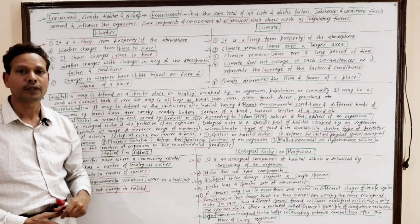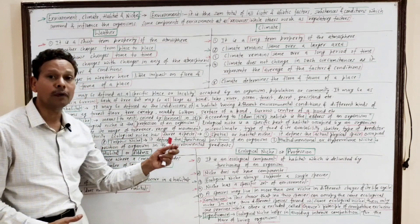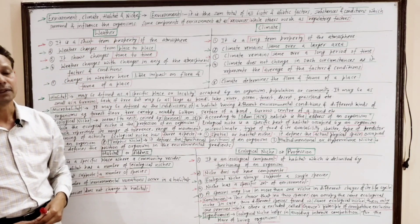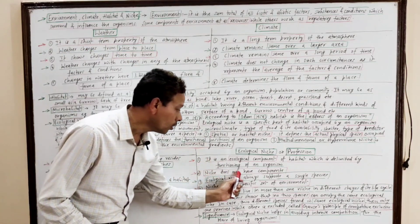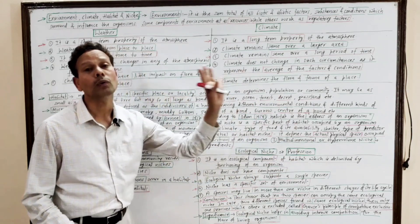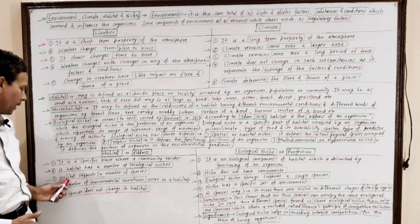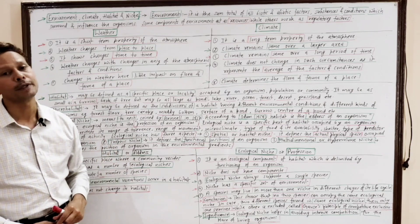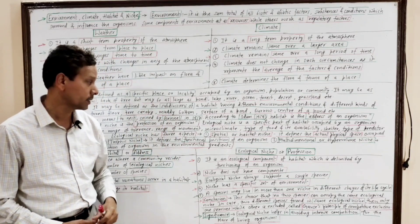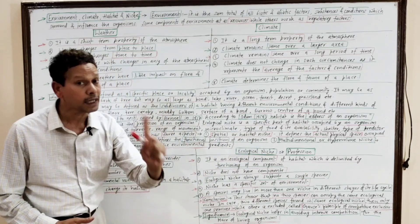A habitat may possess a number of ecological niches, but an ecological niche has no components. Habitat supports a number of species, but importantly, an ecological niche always supports a single species.